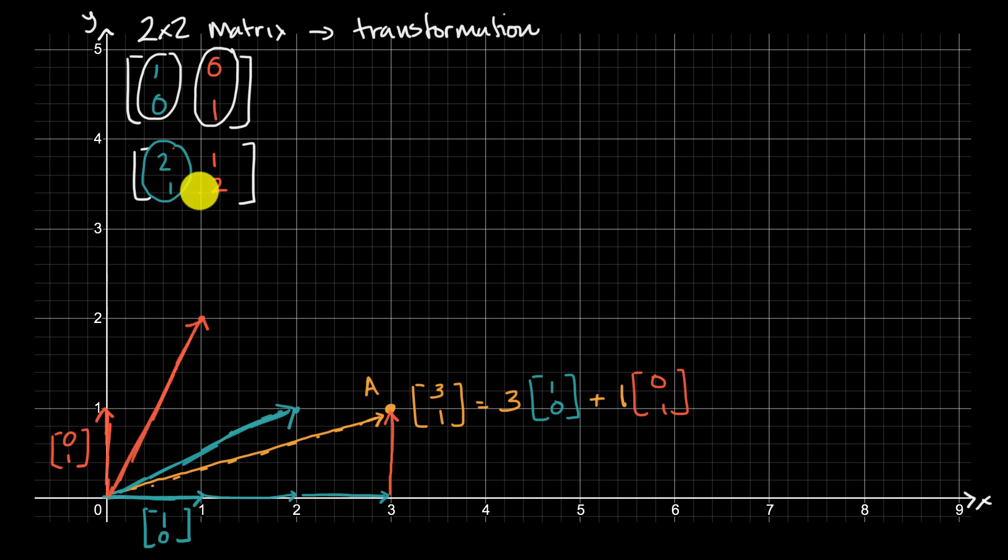And the way that this represents a transformation is that anything that was a weighted sum of the [1, 0] and the [0, 1] vectors originally, you can now view as a weighted sum of the [2, 1] and the [1, 2] vectors. And so we can now think of another point, A prime, that's not going to be three of the [1, 0]s and one of the [0, 1]s. We can think of it as, let me write it over here, as three of the [2, 1]s plus one of the [1, 2]s. One of these, [1, 2].